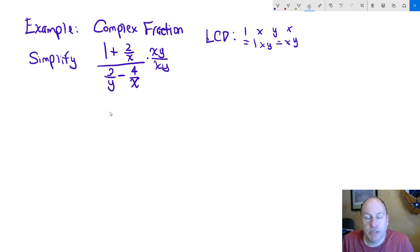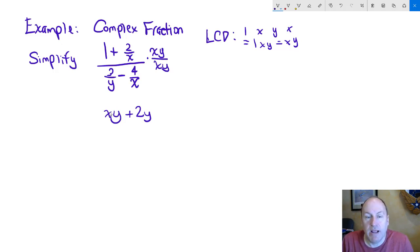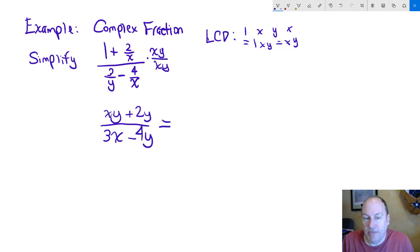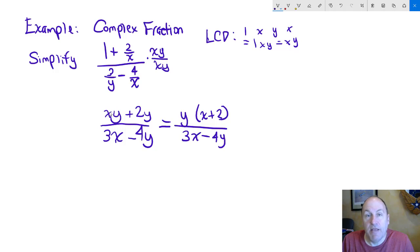Multiplying each term by xy: 1 times xy is xy; 2 over x times xy — the x's cancel — leaves 2y; 3 over y times xy — the y's cancel — leaves 3x; and 4 over x times xy — the x's cancel — leaves minus 4y. We can then factor a y out of the numerator, giving y times x plus 2 over 3x minus 4y. And that's all we can do with this.